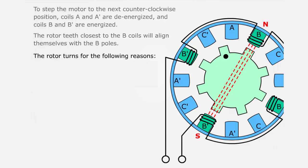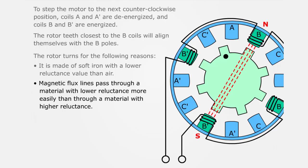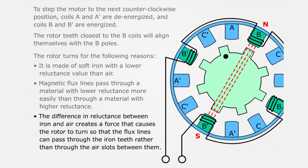The rotor turns for the following reasons. It is made of soft iron with a lower reluctance value than air. Magnetic flux lines pass through a material with lower reluctance more easily than through a material with higher reluctance. The difference in reluctance between iron and air creates a force that causes the rotor to turn so that the flux lines can pass through the iron teeth rather than through the air slots between them.